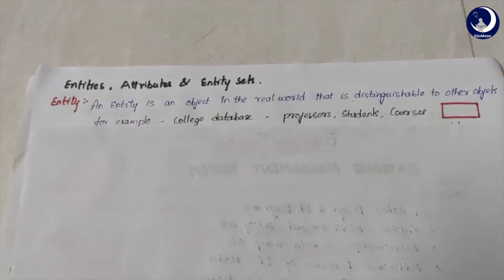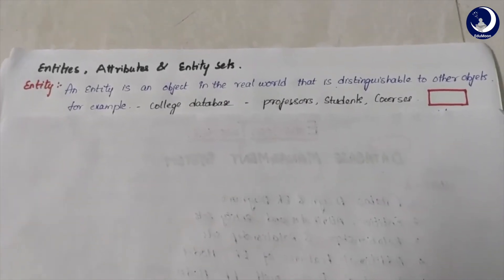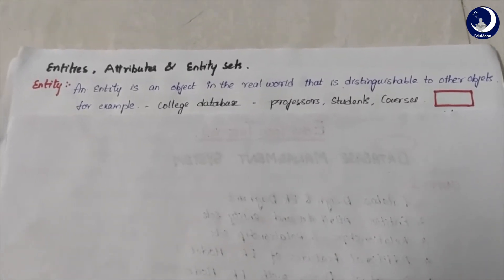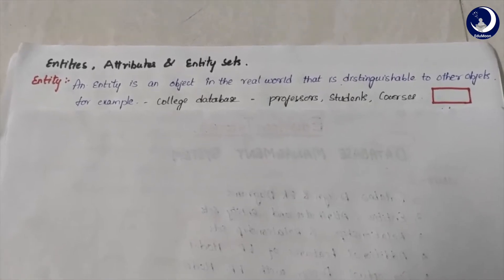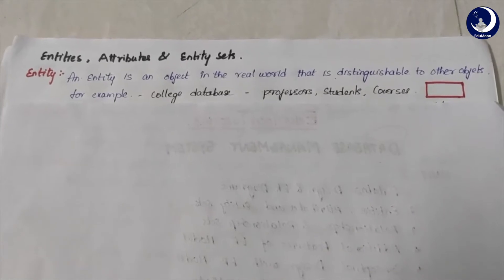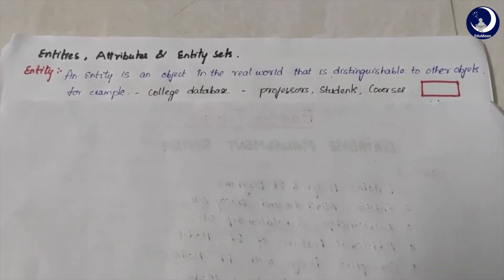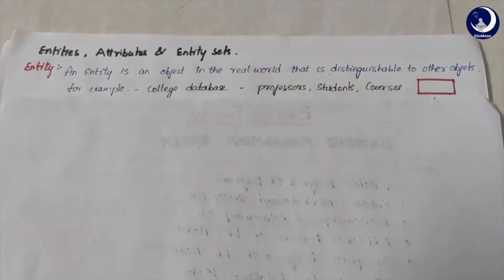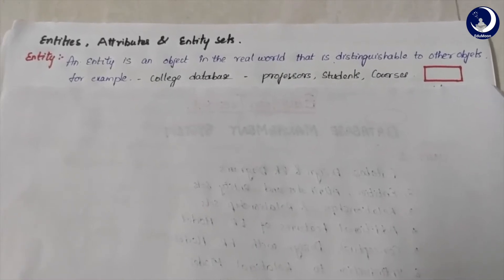Entities, attributes and entity sets. An entity is an object that is distinguishable from other objects. An entity can be a physical object like a student or employee, or it can also be a conceptual object like an organization, a company, or a university. For example, in a college database we have different entities like professors, students, and courses. In an ER diagram, entities are represented with a rectangle.